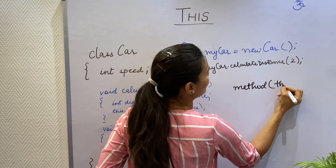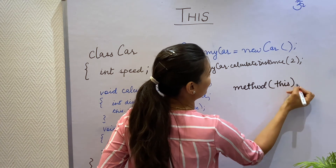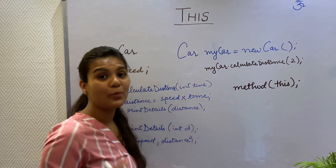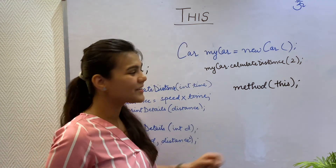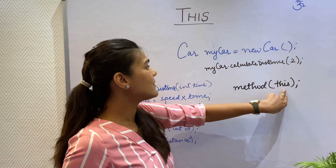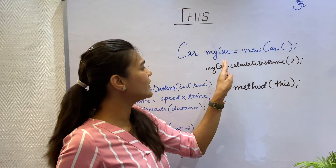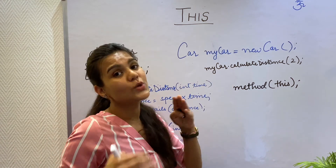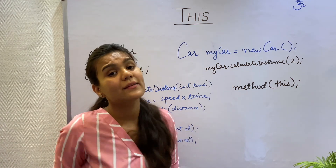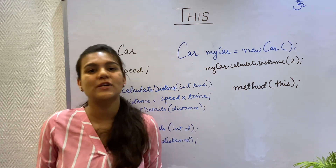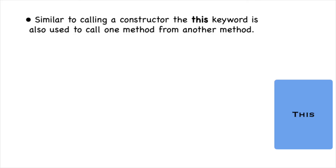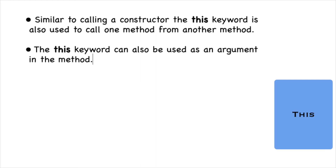I can also pass the this keyword as a method argument. The this keyword refers to the current object, so the current object gets passed when I pass the this keyword as an argument. This brings me to the end of the this keyword.